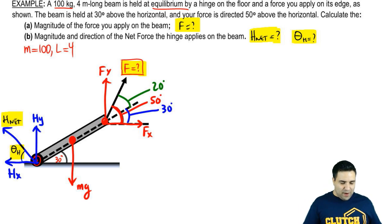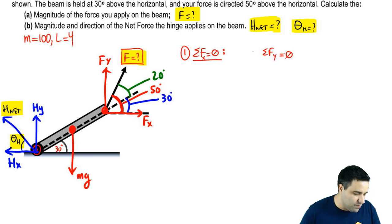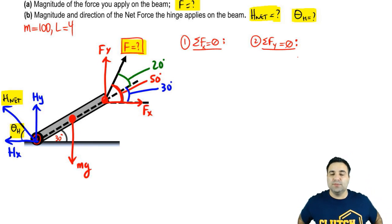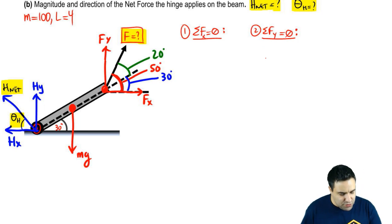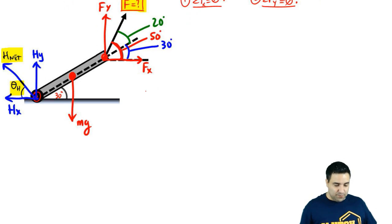So I have the net H force, H net. And then I have the angle, which is theta of H. So we're looking for F. And we're looking for H net and theta H. So let me just highlight the stuff we're looking for. And the way we're going to solve this is by writing that the sum of all forces equals zero on the X axis.